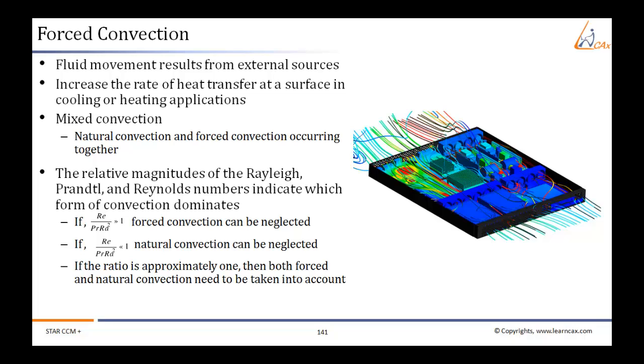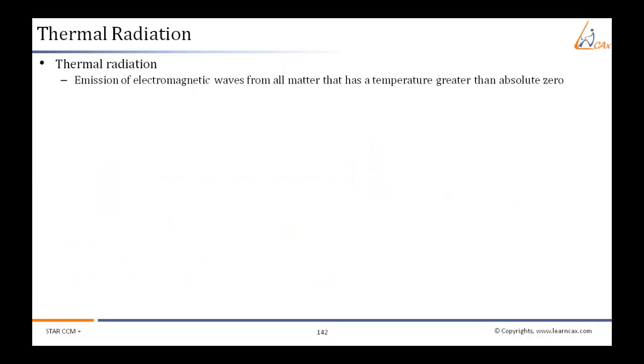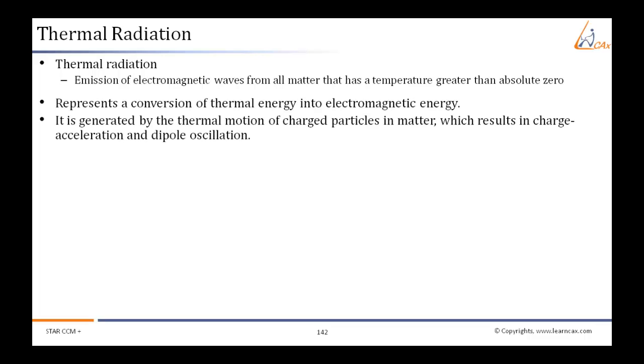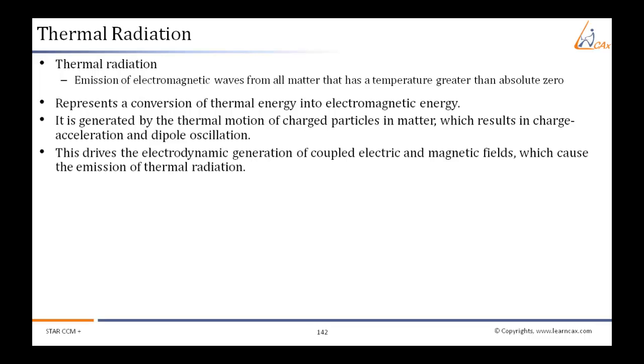Thermal radiation is the emission of electromagnetic waves from all matter that is at a temperature greater than absolute zero and represents a conversion of thermal energy into electromagnetic energy. It is generated by the thermal motion of charged particles in matter, which results in charge acceleration and dipole oscillation. This drives the electrodynamic generation of coupled electric and magnetic fields which cause the emission of thermal radiation.